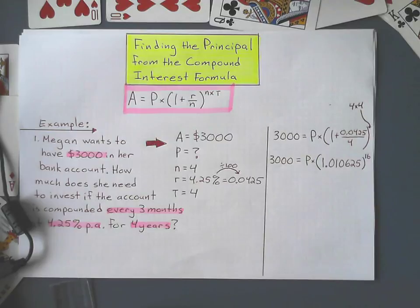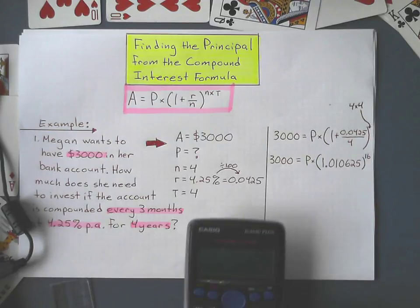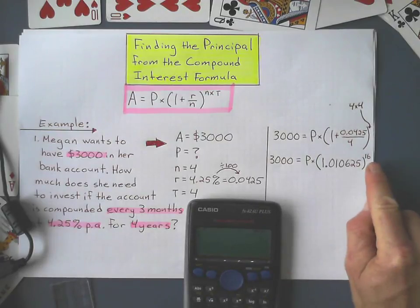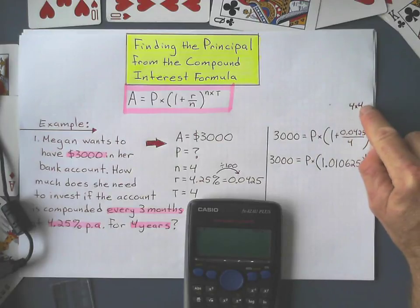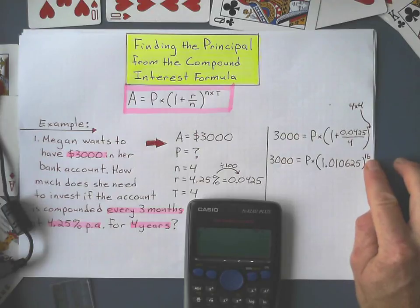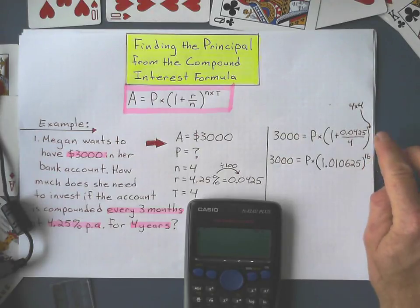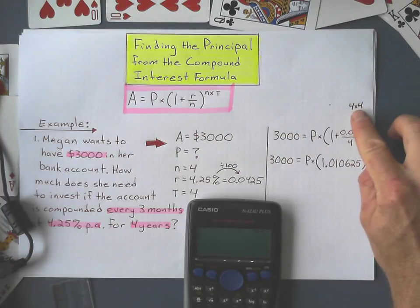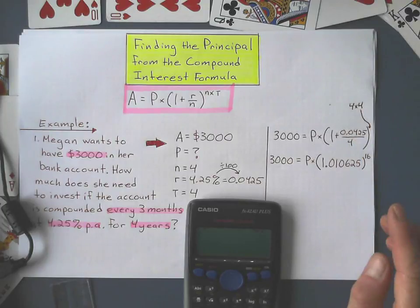When you work this out on the calculator, it's going to help to do this four times four in your head, and not on the calculator, because whole number exponents are easier, and on some calculators, it won't write all of this as an exponent unless you tell it to.